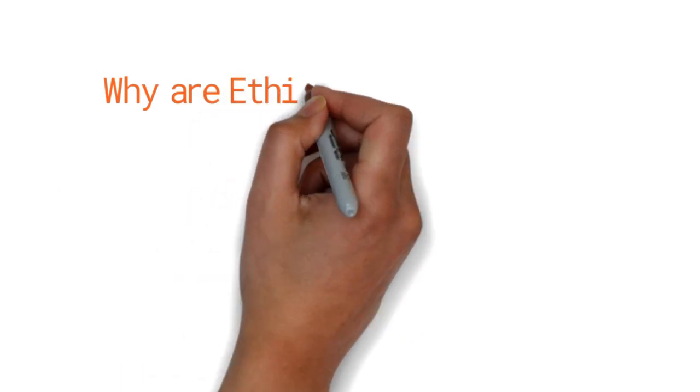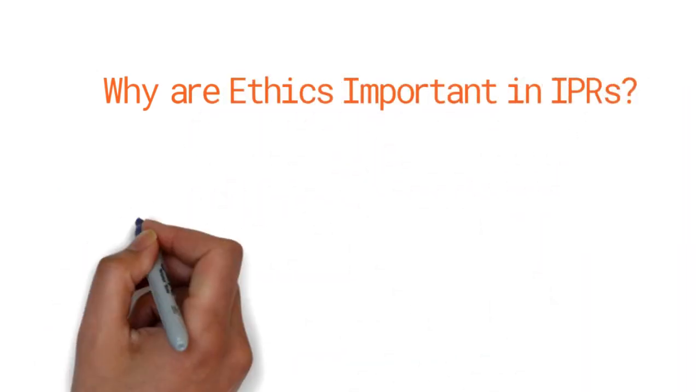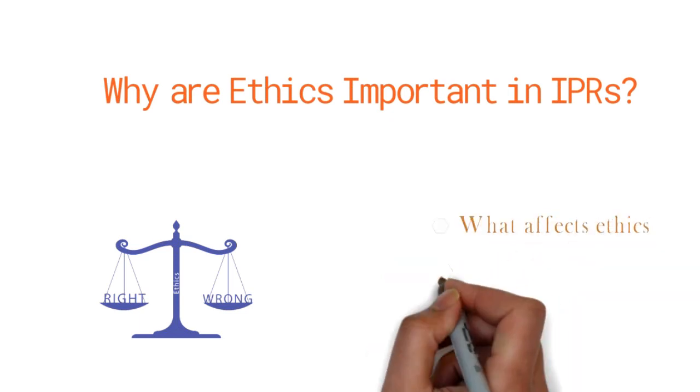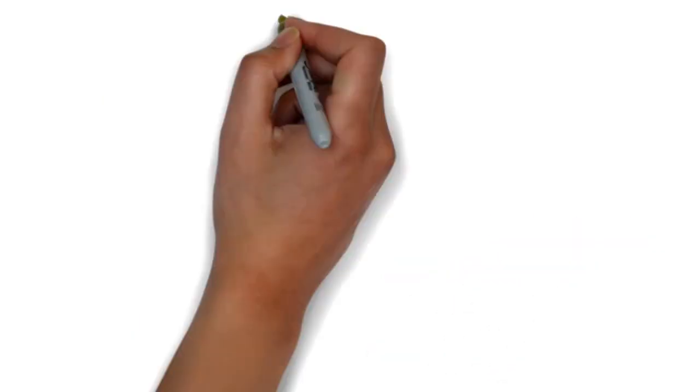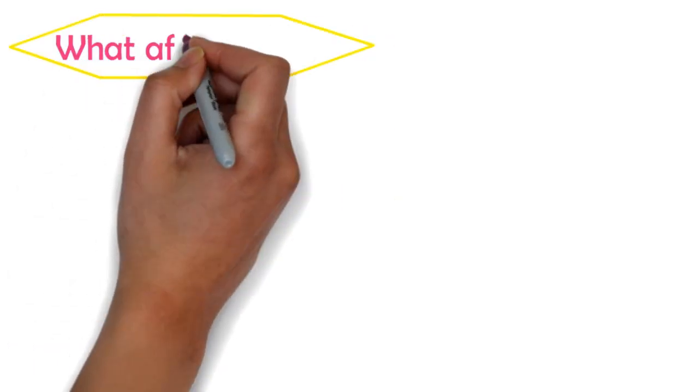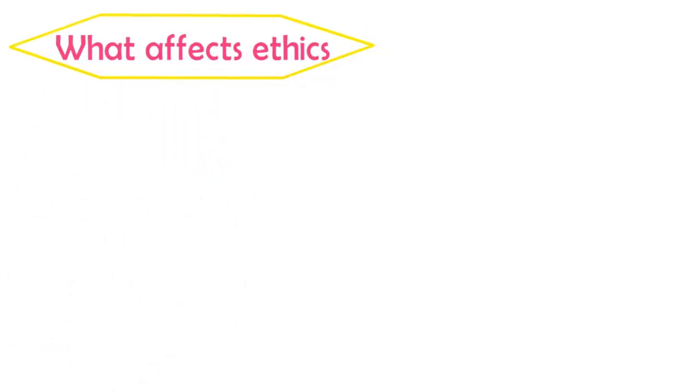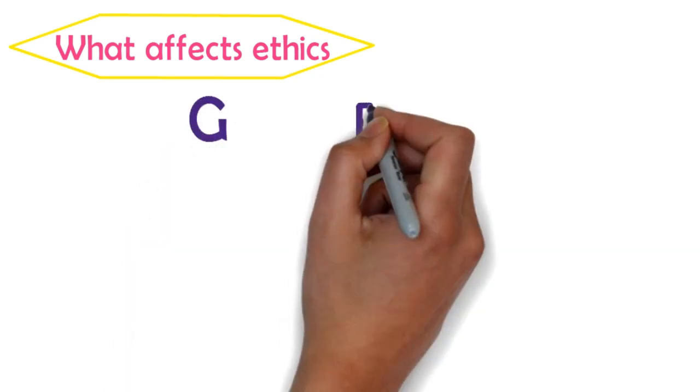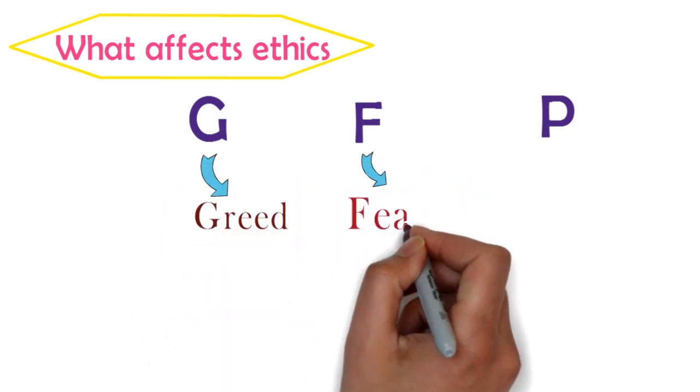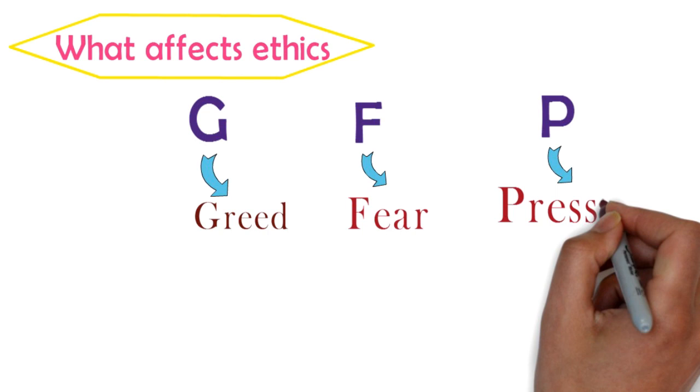Today, I am going to talk to you about things that affect ethics and the sources we have for ethics and values. Let us start with the first point, what affects ethics. The answer is GFP: G means greed, F means fear, P means pressure.